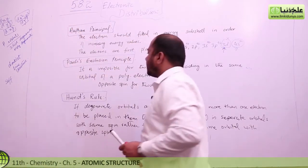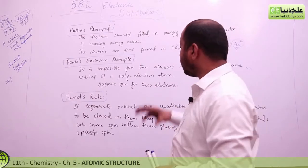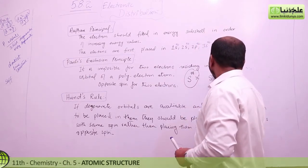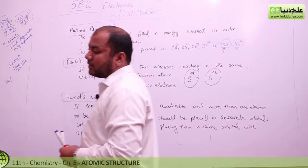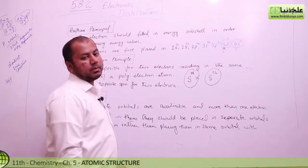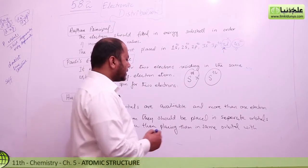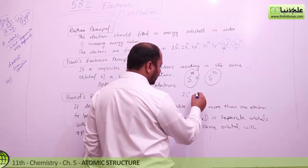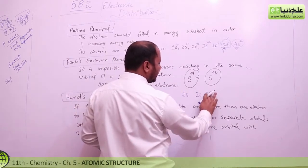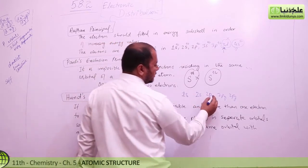The other law is the Pauli exclusion principle. It is impossible for two electrons to reside in the same orbital of a poly-electron system with opposite spin for the electrons. This is known as the Pauli exclusion principle.